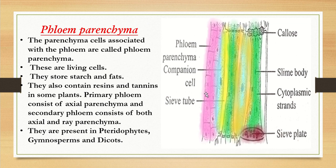Phloem parenchyma, shown in pink, are parenchyma cells associated with the phloem. They are living cells responsible for the storage of starch and fats, and sometimes resins and tannins in some plants. Primary phloem contains axial parenchyma, while secondary phloem consists of both axial and ray parenchyma. Axial parenchyma cells are arranged longitudinally; ray parenchyma cells are arranged radially in rows. Phloem parenchyma is present in pteridophytes, gymnosperms, and dicots.